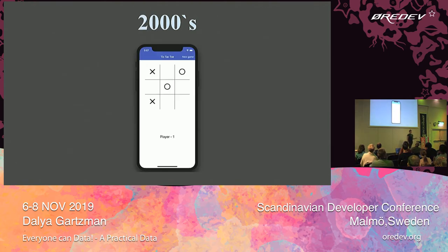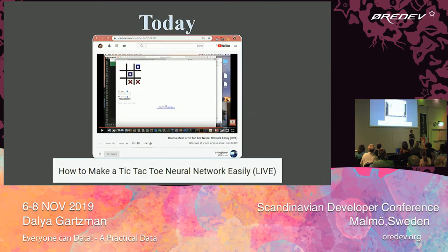Back in the 2000s, you could, with just a few lines of code, program a game of tic-tac-toe that you can play on your phone. And these days, with just a few lines of code, you could program a neural network that learns by itself how to play and win at tic-tac-toe.